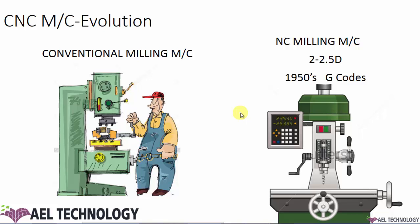That gave rise to the necessity of creating NC machines — that is the second phase of the evolution of CNC machines. In NC machines we can do 2 to 2.5D products, and in the 1950s G-codes were generated and used to run the NC machine. However, the limitation was that there were no inputting devices; the input device at that time was a program tape, and if you wanted to change the program you had to prepare a new program tape and run it on the machine.